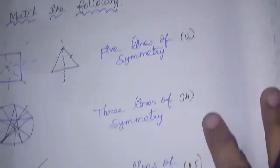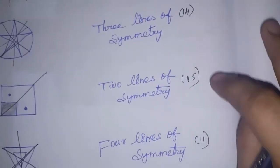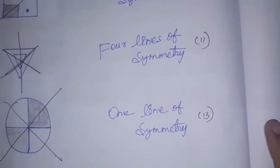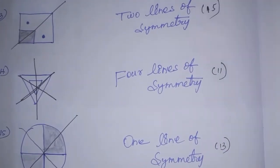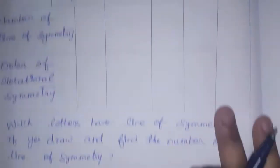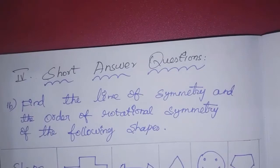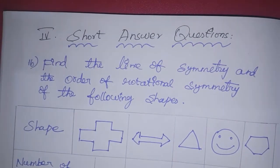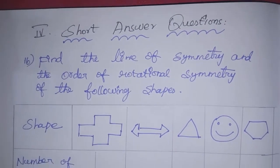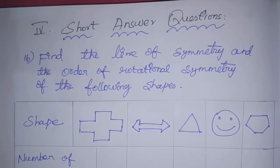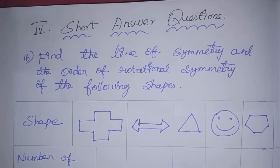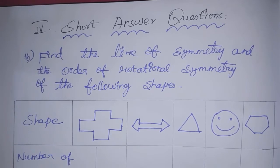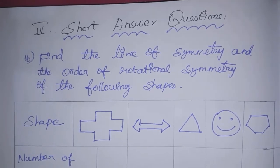So sums 12, 14, 15, 11, 13 are done. Next is Roman number 4, short answer questions. 16th sum — find the line of symmetry and the order of rotational symmetry of the following shapes.